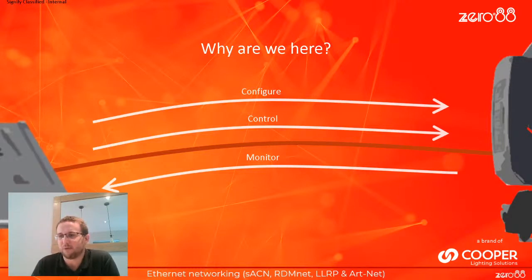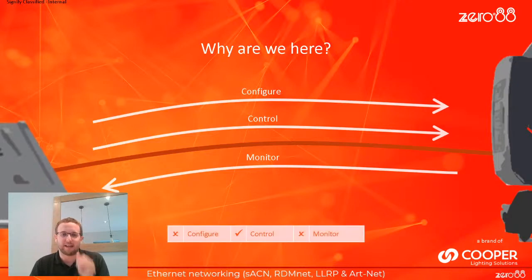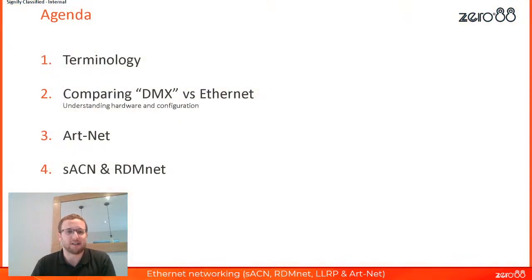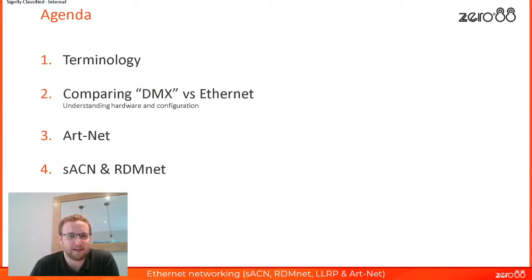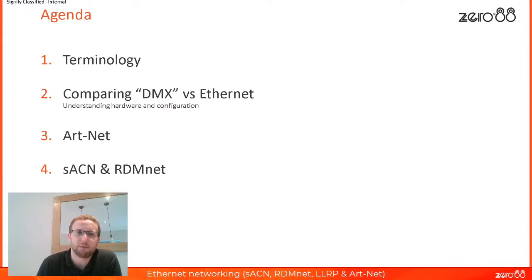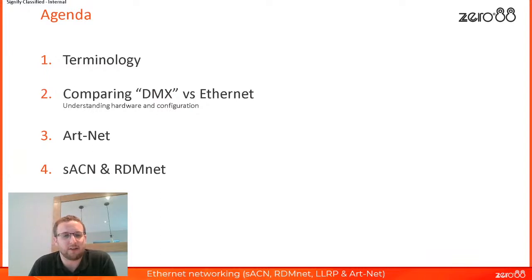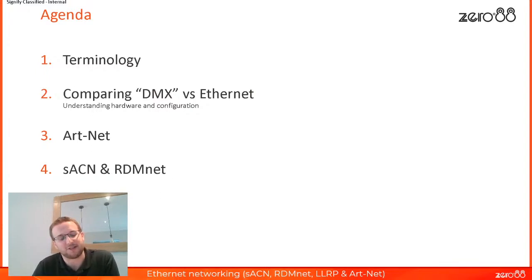In this session, we're going to be looking at how we can do those three things over Ethernet networking, and we're going to do that by looking at the following agenda. We're going to look at some terminology first, then compare DMX versus Ethernet. We're then going to look at Artnet in a little more detail, and then Streaming ACN and RDMnet. Please feel free to ask any questions.